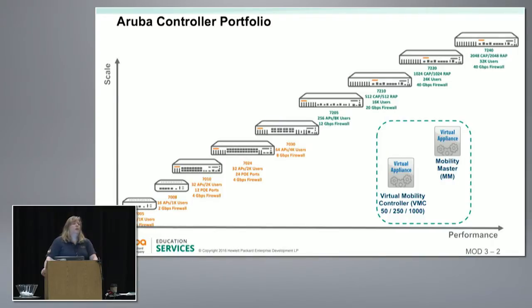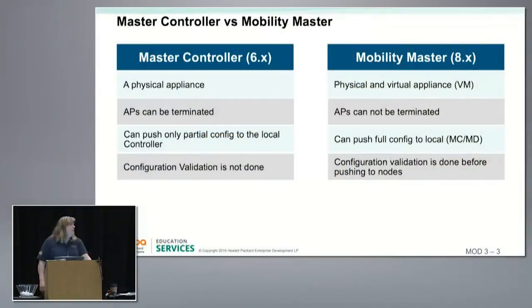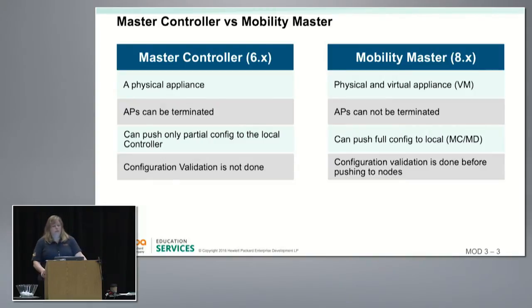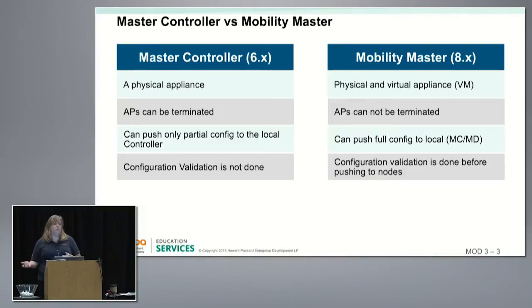Let's compare this to the AOS 6.x stream. Those familiar with the old master/local architecture will know the master had some limitations — it could only run on a physical hardware appliance, APs could terminate on it meaning all user traffic flowed through that controller, and the master would only push a partial config down to the local controllers. Local attributes like IP addressing, VLANs, and port configuration would not be pushed down.